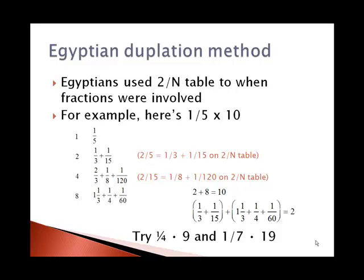Then we double 2 to get 4, and double 1 third to get 2 thirds. 2 thirds was a special Egyptian fraction — it was okay to have that. Double 1 fifteenth to get 2 fifths, but that's on the table: 1 eighth plus 1 over 120. Then double 4 to get 8, and double 2 thirds to get 1 and 1 third. Double 1 eighth to get 1 fourth, and double 1 over 120 to get 1 sixtieth. We're trying to get 1 fifth times 10; since 2 plus 8 is 10, we look at the 2 row and the 8 row. Adding 1 third plus 1 fifteenth plus 1 and 1 third plus 1 fourth plus 1 sixtieth does indeed sum to 2.